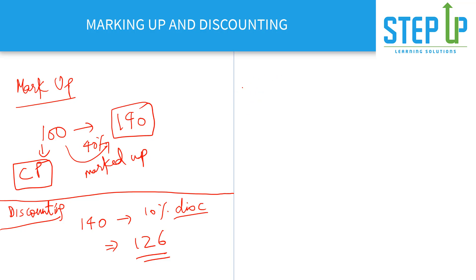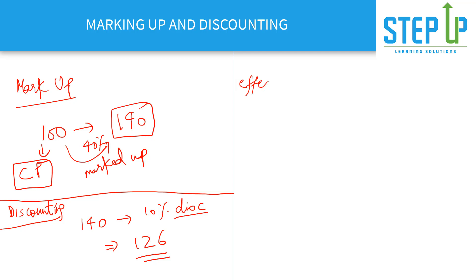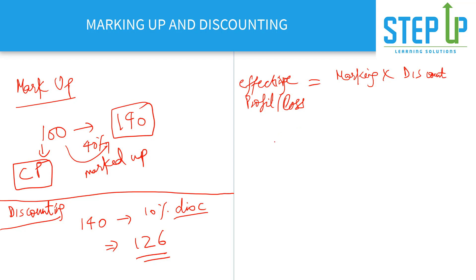When both marking up and discounting are applied, the effective change in SP/CP is a function of both effects — similar to successive percentage change. The effective change SP/CP equals the markup factor multiplied by the discount factor. For example, a 20% markup can be written as 6/5 in SP/CP terms, since cost price is 5 and marked price is 6.